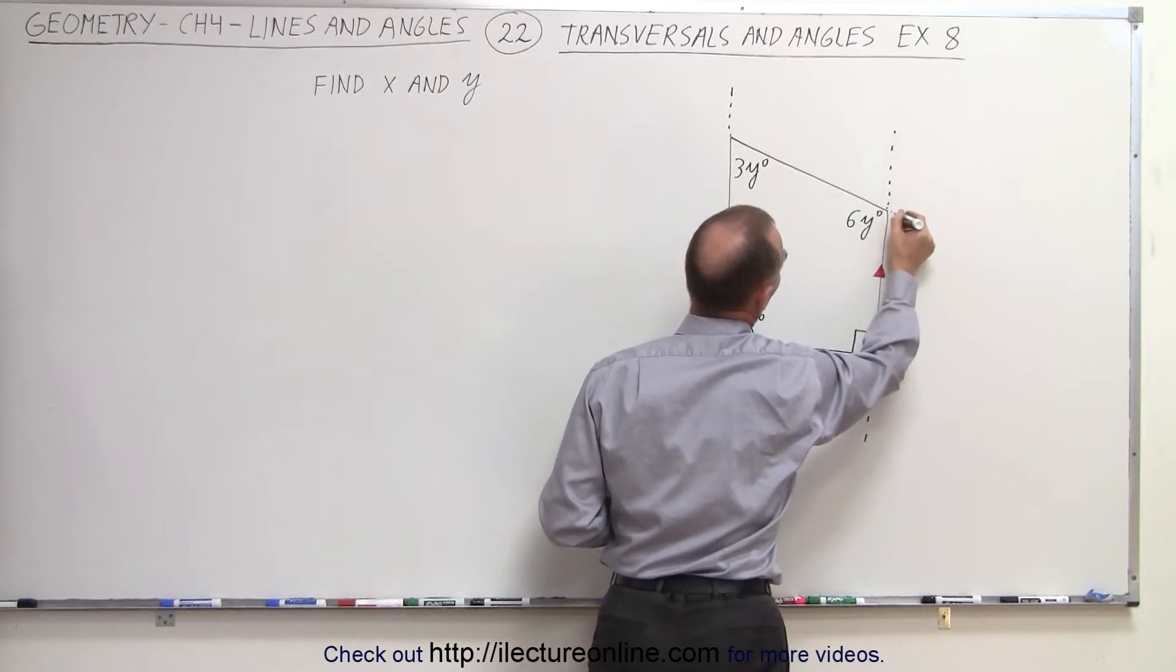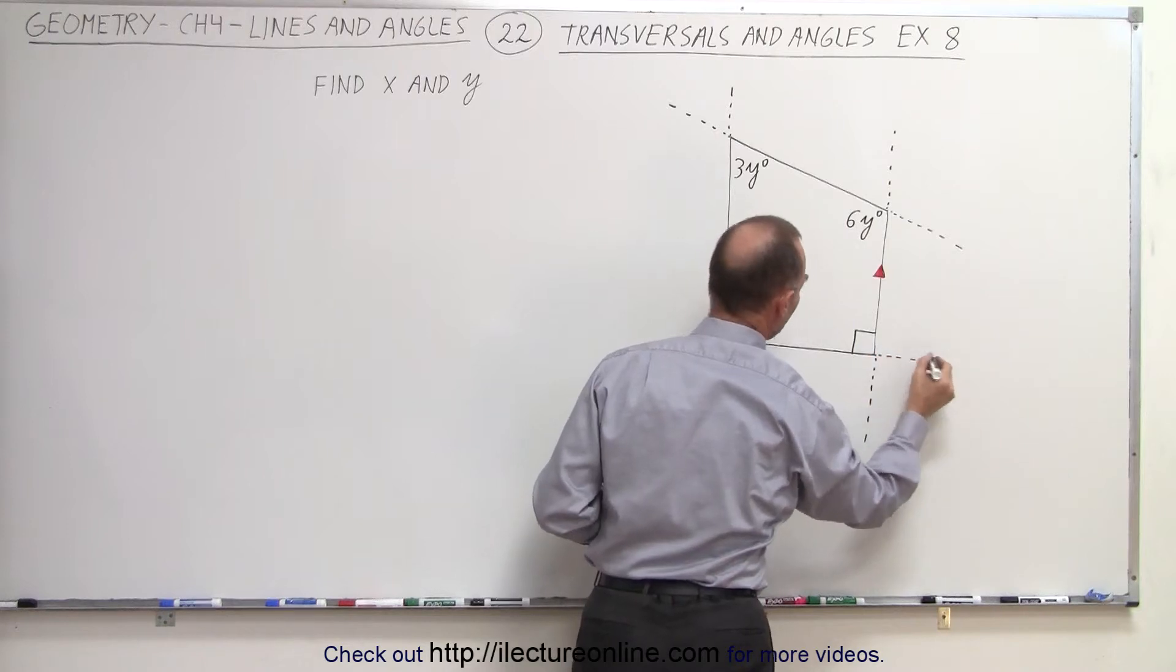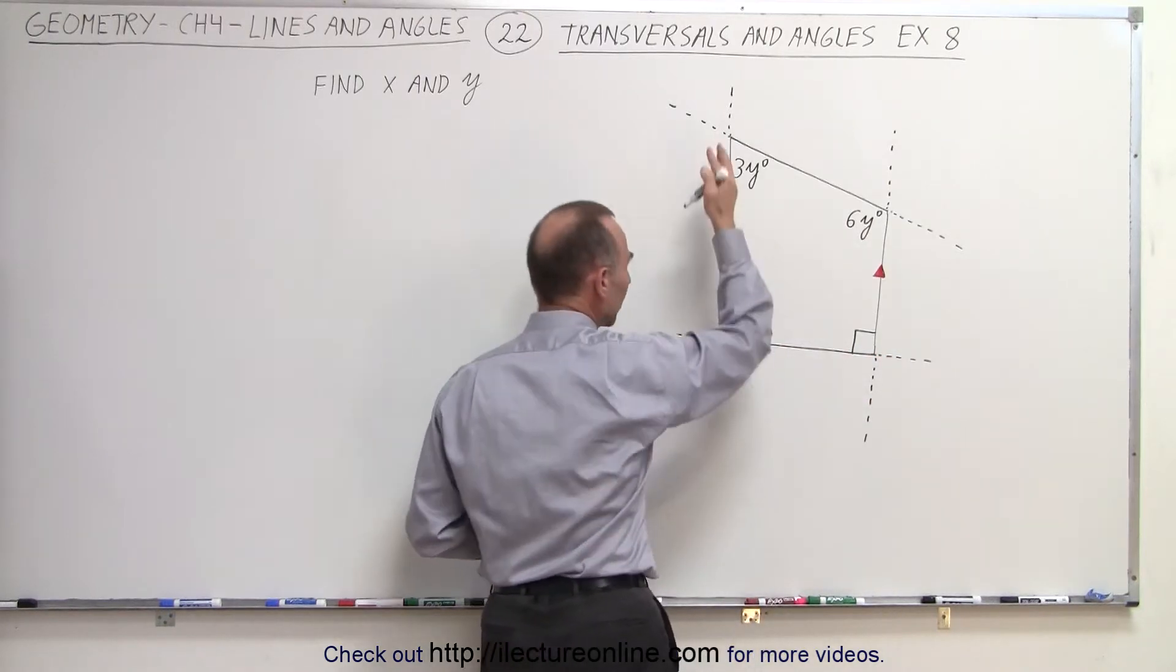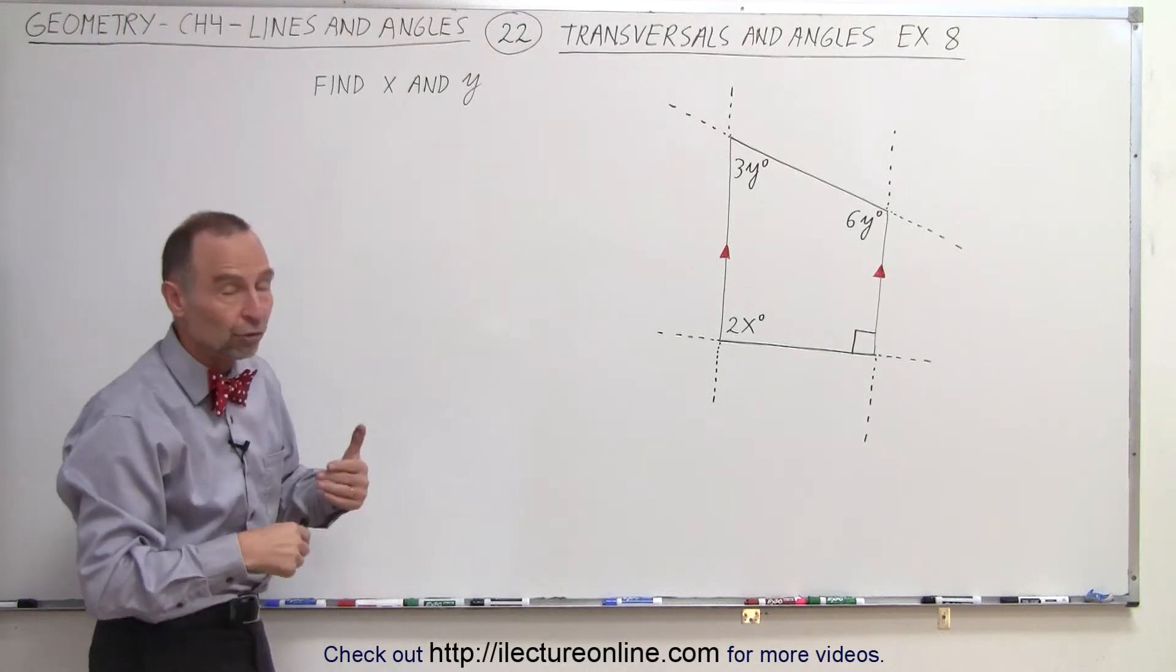And then we're going to extend this line here and here, and the same with this line here and here. And now it becomes much easier to see that these are two parallel lines crossed by two transversals, so we can use the rules that we're familiar with.